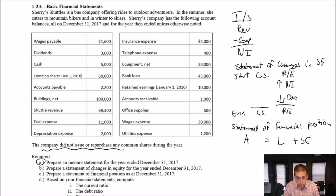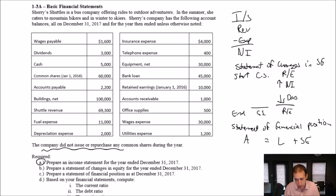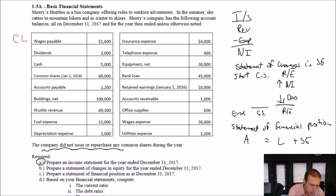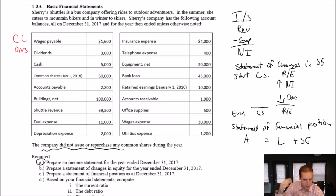So wages payable — our first account. We want to classify it: is it an asset, liability, shareholders' equity, revenue, expense, or dividend? Wages payable is a liability — it's got the word 'payable' in it, that gives it away. That is a current liability. Dividends — we'll just call dividends dividends. Some profs might say it's a shareholders' equity account, a sub-account of retained earnings, but I like to treat it as its own animal.